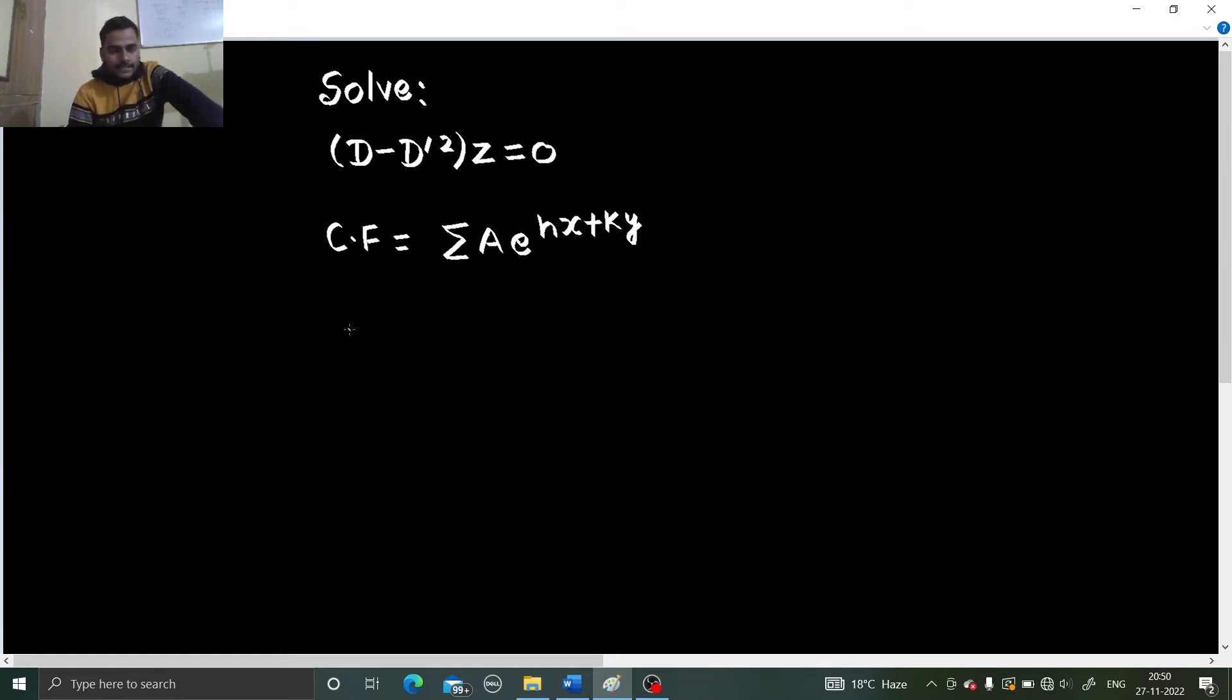Here, we write like this. Now where this function of the relation between h and k, the function of h and k, can be derived by putting d as k and d dash as, d as h and d dash as k in the initial equation. If we put that, you get h minus k square equals to 0 or h equals to k square.